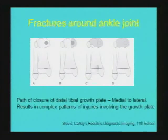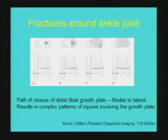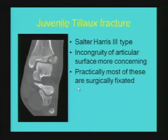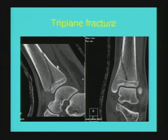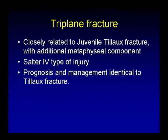Fractures around the ankle joint have a specific complex pattern because of the peculiar pattern of growth plate closure, which proceeds from a medial point called Kump's bump involving the medial epiphysis and then proceeds laterally. This results in classical patterns of injury around the ankle joint. The two most common are the juvenile Tillaux fracture — a Salter 3 fracture through the epiphysis and growth plate — and the triplane fracture, a Salter 4 fracture through the epiphysis and growth plate. CT scan is used in both because it is important to demonstrate displacement and articular congruence of the epiphysis, and almost all cases require surgical internal fixation.